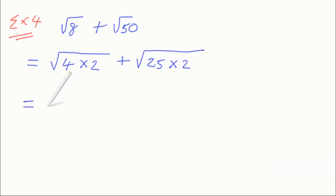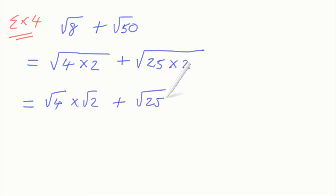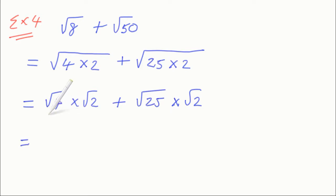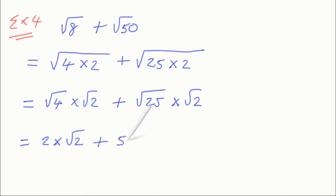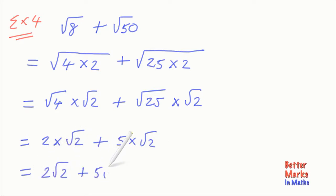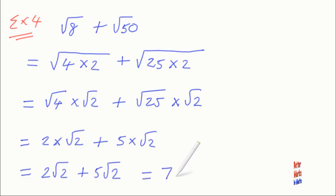The next step is to separate the surds: root 4 times root 2, plus root 25 times root 2. If you always put the perfect square number first, then the first surd you get when you split them up will always be the one with an exact square root. The square root of 4 is 2, so this becomes 2 root 2, and the square root of 25 is 5, so that becomes 5 root 2 — giving 2 root 2 plus 5 root 2. Now being like surds, 2 plus 5 is 7, so it just becomes 7 root 2.